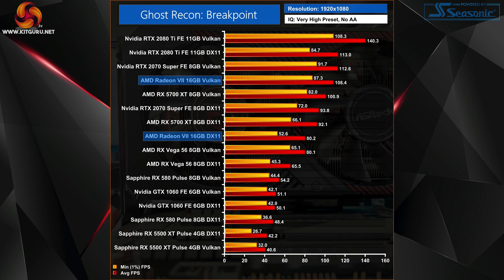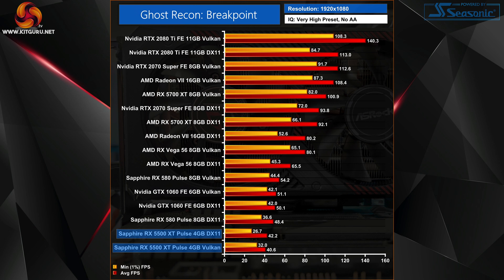So far things look really good for Vulkan over DX11, but as we head down the stack things start to change and we see some very interesting results. Nvidia's Pascal GTX 1060, for instance, saw effectively unchanged frame rates when making the switch — Vulkan did come in marginally faster on paper, but the difference is absolutely trivial and you'd never notice it in the real world. AMD's more budget-oriented RX 5500 XT actually flips things on its head: at 1080p this 4GB GPU performs slightly worse with Vulkan in terms of average frame rates, though its one percent lows were better with Vulkan.